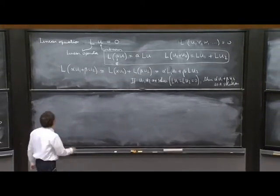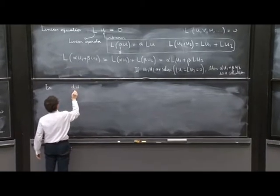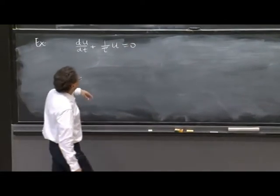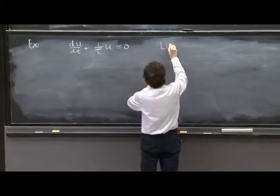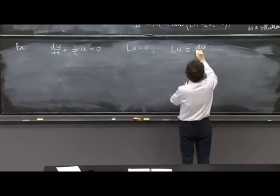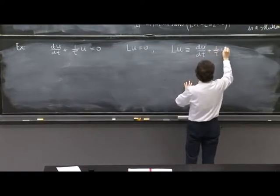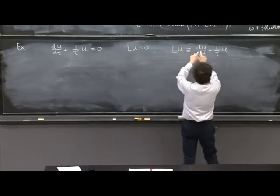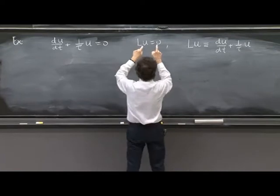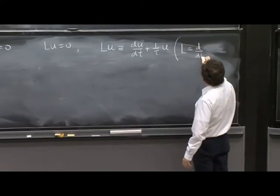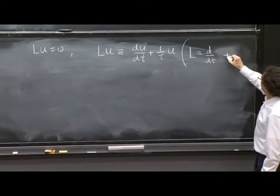And then you realize that if u1 and u2 are solutions, which means Lu1 equal Lu2 equals 0, if they solve the equation, then alpha u1 plus beta u2 is a solution. Because if Lu1 is 0 and Lu2 is 0, L of alpha u1 plus beta u2 is 0. And it is a solution. So this is how we write a linear equation. Now, an example probably would help. If I have the differential equation du/dt plus 1 over tau u equals 0, I can write it as an equation of the form Lu equals 0 by taking L on u to be defined to be du/dt plus 1 over tau u.